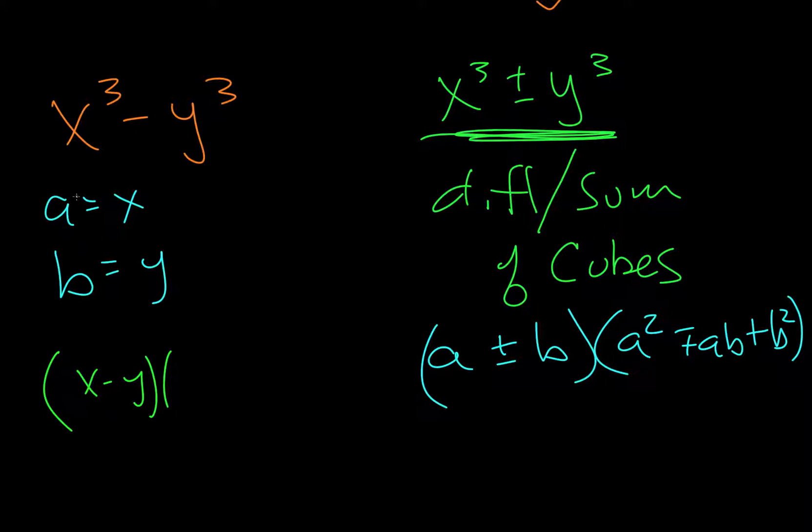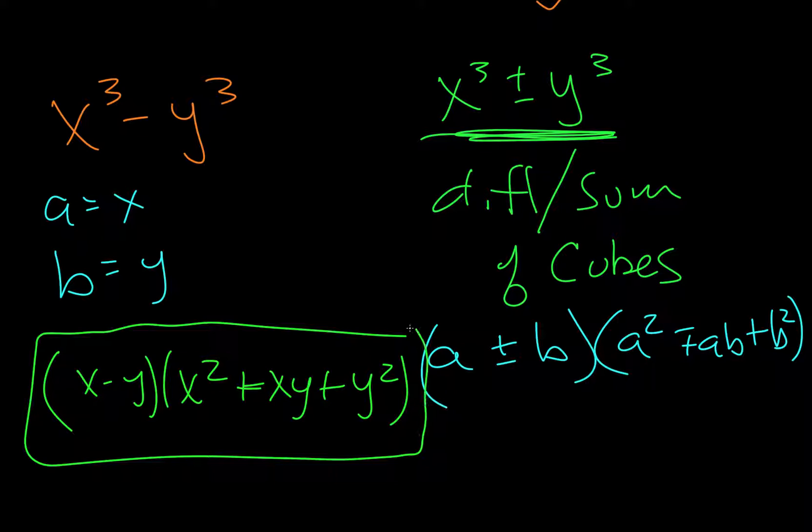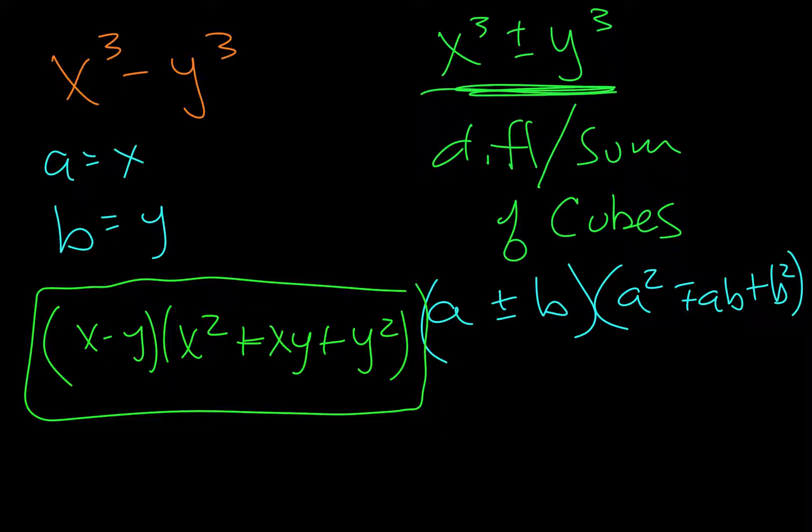And then a squared, which would be x squared. Now I'm following the bottom, so I choose the plus sign. And then we do a times b, so x times y, or xy. This one's always a plus sign. And then b squared, which would be y squared. And that's everything on that problem. And then we'll try one more. I'll keep this formula so you can see it.